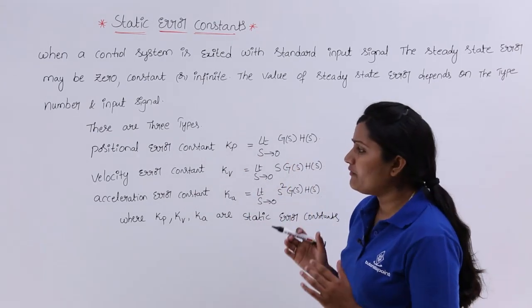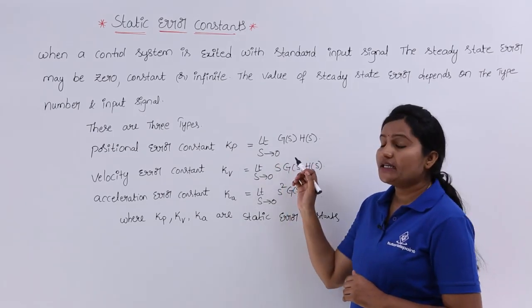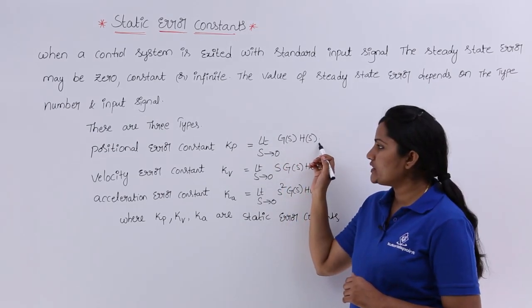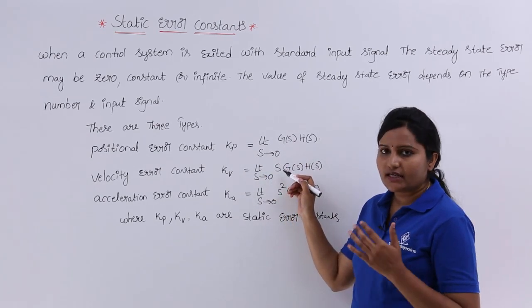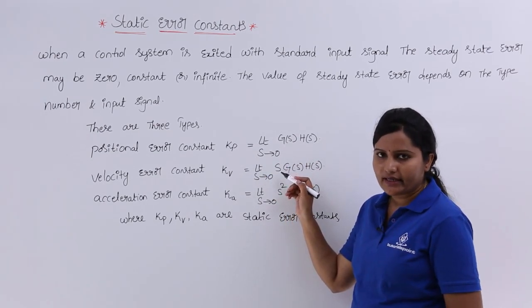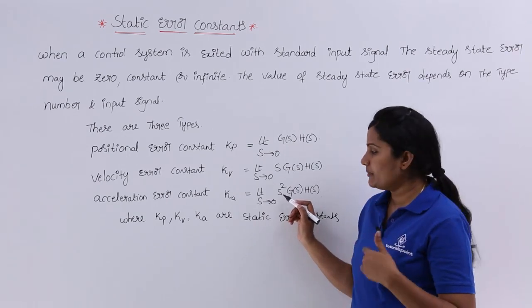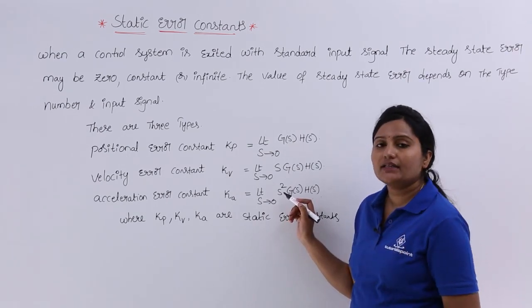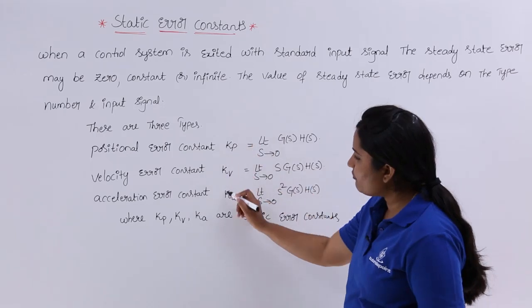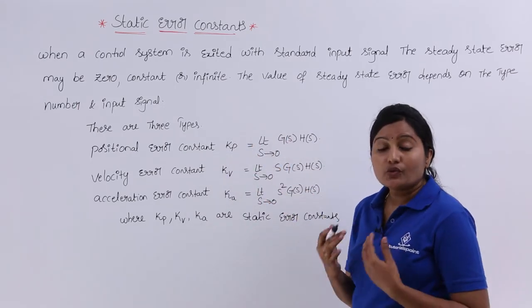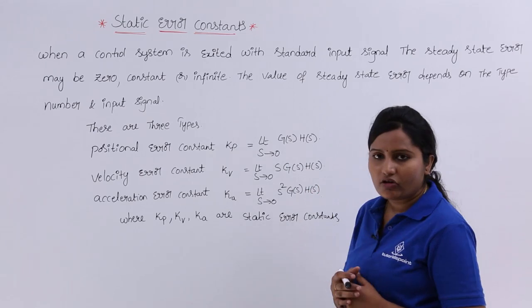The general formula for the positional error constant Kp is the limit as s approaches zero of G(s)·H(s). For the velocity error constant Kv, we multiply by an additional s, giving the limit as s approaches zero of s·G(s)·H(s). For the acceleration error constant Ka, we multiply by s squared, giving the limit as s approaches zero of s²·G(s)·H(s). These three formulas are very important for solving problems on static error constants.